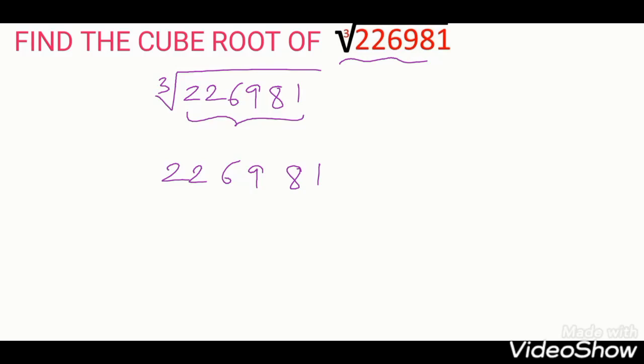I will use here three steps. The first step, look at last digit. I have to look at last digit. Here we have last digit 1. So 1 for 1, we have seen already. 1 means same digit. 1 coming means 1 only will come.